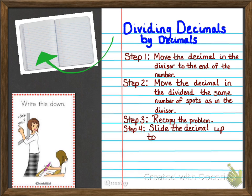Step four, we're going to go ahead and take care of that decimal right away. So we're going to slide the decimal up to the quotient line. And then finally, step five, we're just going to divide like normal. And that's it. So I know it seems like a lot, but once we go through the examples, it really won't be too bad.